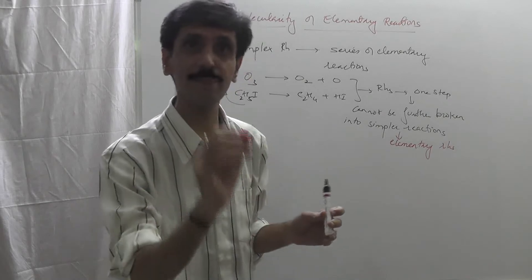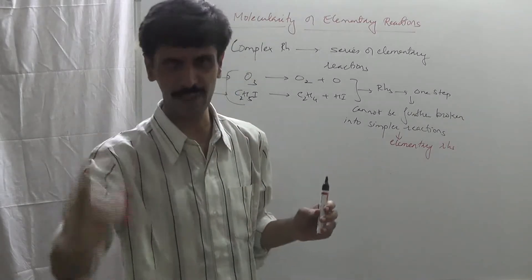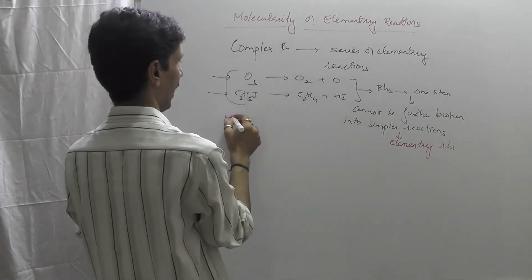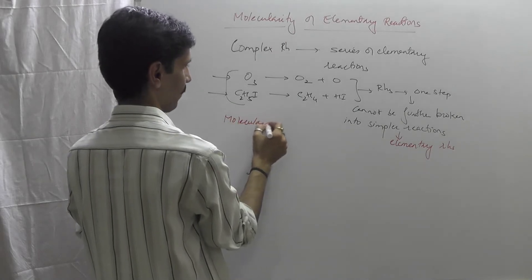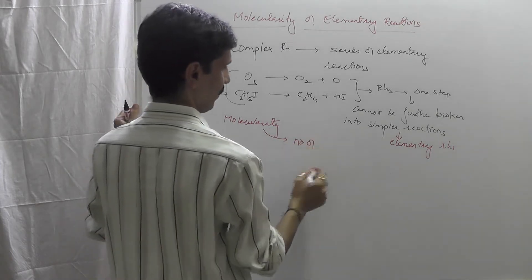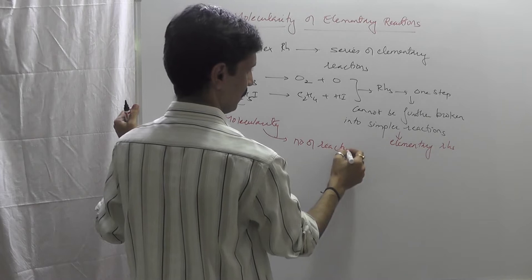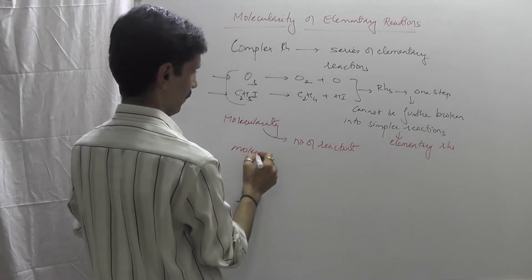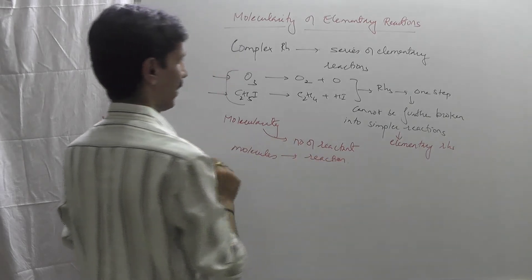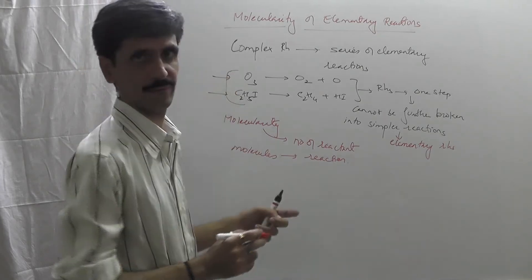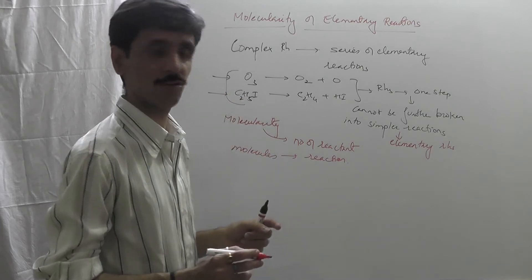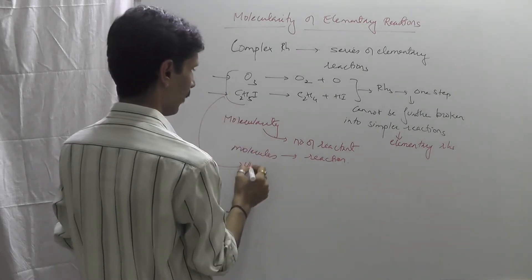So when we identify the simplest one-step reactions that cannot be further broken down, they are called elementary reactions. Now, once you understand elementary reactions, we go into molecularity. Molecularity is nothing but the number of reactant molecules which are involved in the reaction. For ozone and ethyl iodide, there is only one molecule each, so these are called unimolecular reactions.